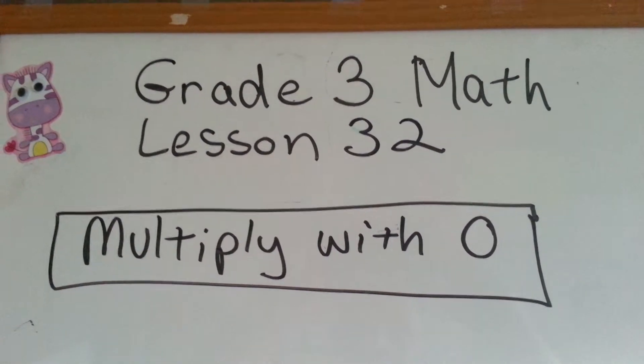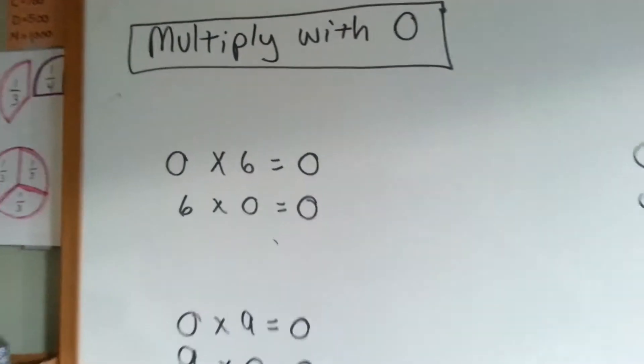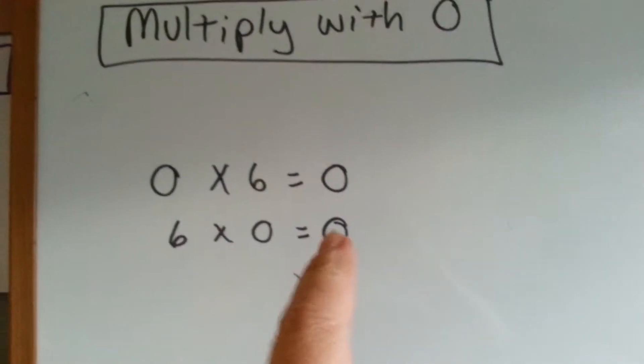Grade 3 Math, Lesson 32: Multiply with 0. When you multiply with 0, your answer is always 0.